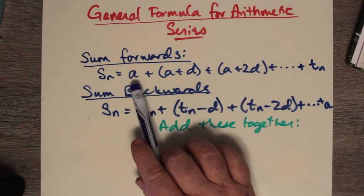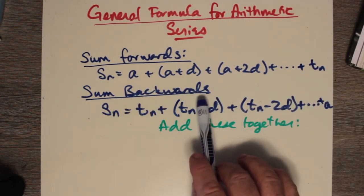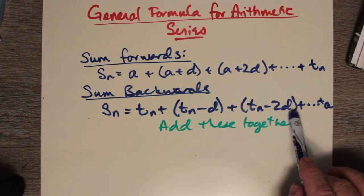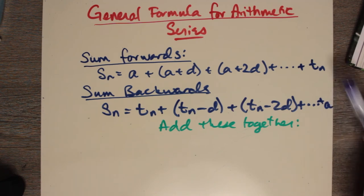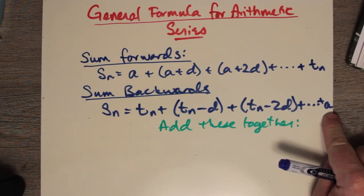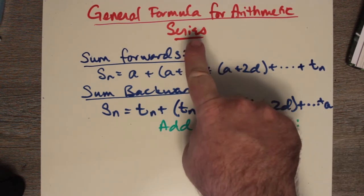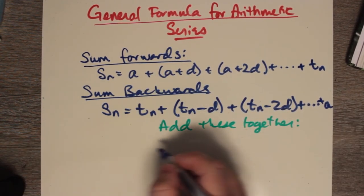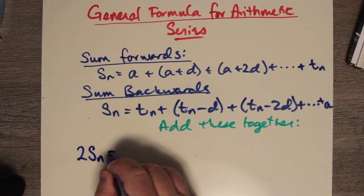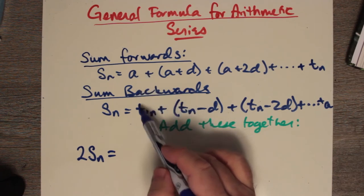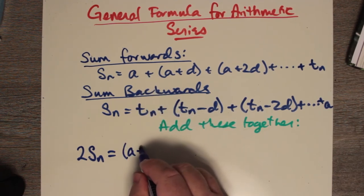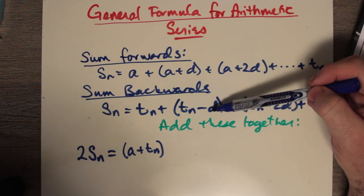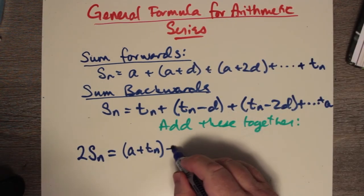The sum going backwards would be tn plus the last term subtract d, plus the last term subtract 2 times d. We're going backwards, listing the terms in reverse order and finally ending at a. Now the trick is to add these two together. On this side, Sn plus Sn is just 2Sn. Then notice we get a plus tn, and then d minus d is zero, so we just get another a plus tn.